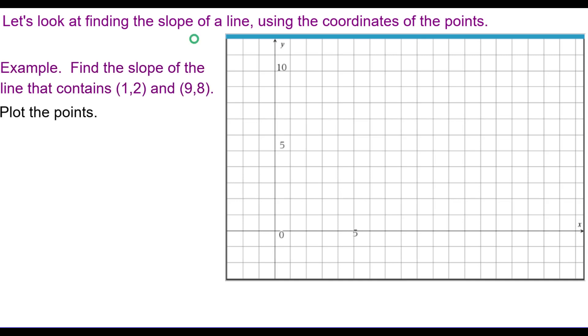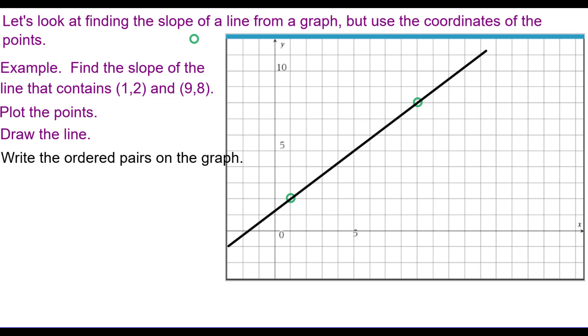First of all, we want to plot the points on a grid. One, two and nine, eight. Draw the line containing those two points. Write the ordered pairs on the graph.